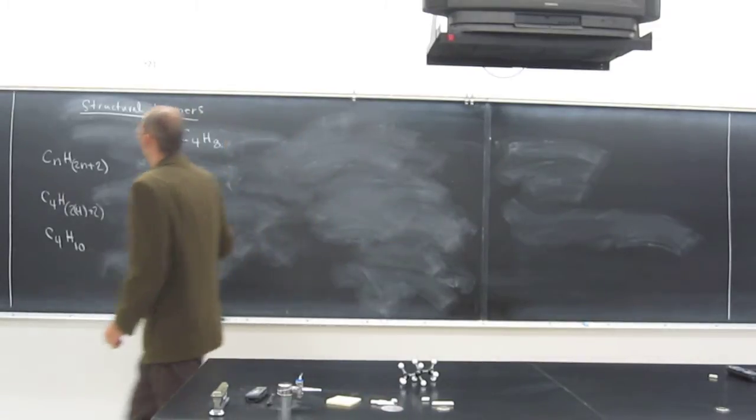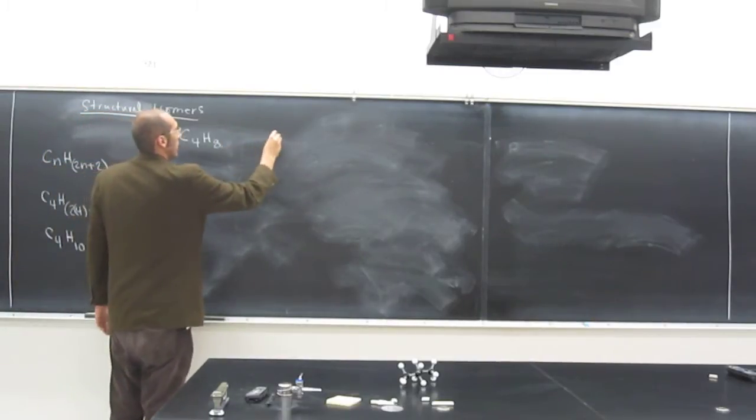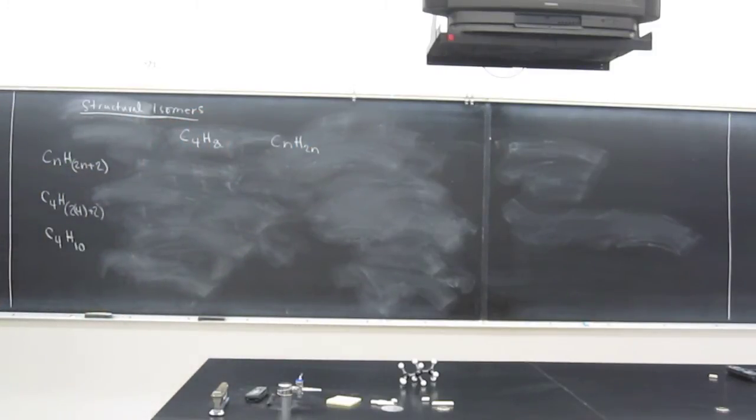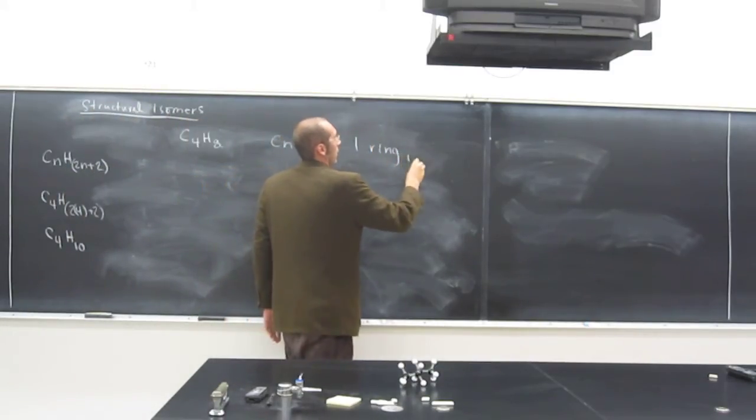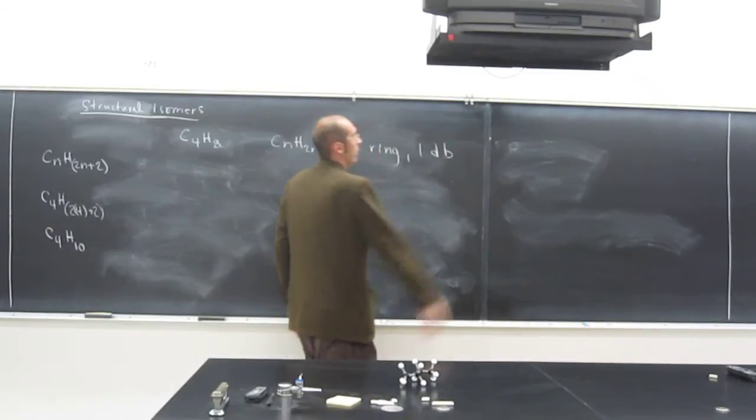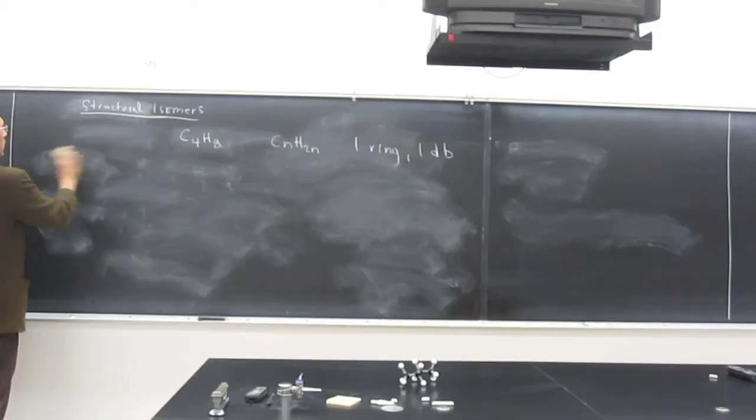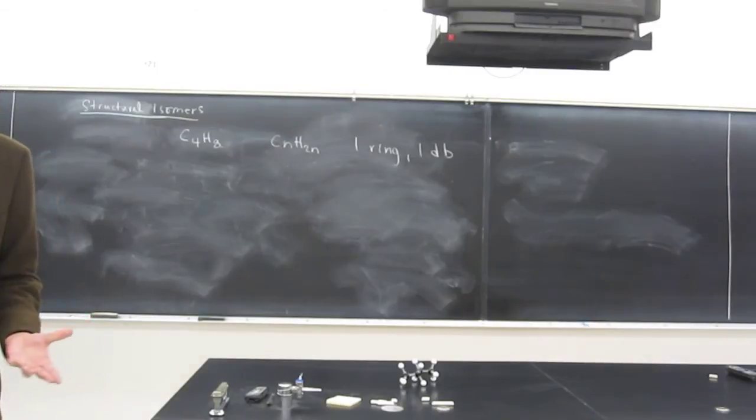In fact, if you've got this formula here, C, what would be CNH2N, okay? That means you've either got one ring in your structure or one double bond. Okay? One ring or one double bond. Double bond. So this is saturated hydrocarbon. So C4H8, we should be looking for rings and double bonds. Okay?